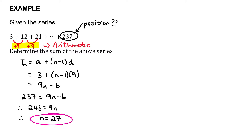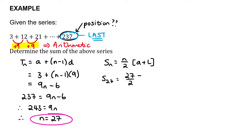Since 237 is our last term, we can use the alternative arithmetic series formula: Sn = n/2 × (a + l). Remember this formula only works for arithmetic series. So S27 = 27/2 × (3 + 237), which gives a final answer of 3,240. The sum of 27 terms is 3,240.